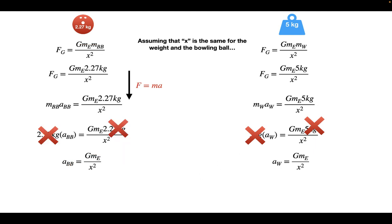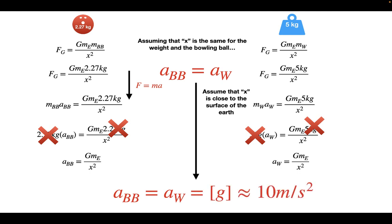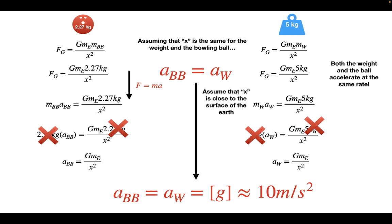What does this math tell us? Assuming x is the same for both objects, the acceleration of the bowling ball equals the acceleration of the weight. If x is close to the surface of the earth, both accelerations equal little g — approximately 10 meters per second squared. So assuming no air resistance, both the weight and the ball accelerate at the same rate and therefore both reach the ground at the same time.